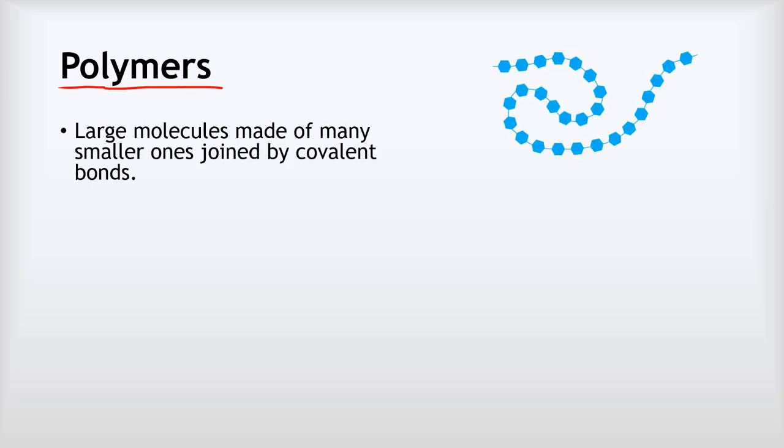The final type of covalent structure we're going to look at is polymers. Now polymers really are just another one of our simple molecular structures, but they're very big ones. These are large molecules made of many smaller ones joined by covalent bonds, and we have lots of examples of these in the natural world.